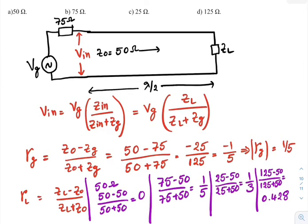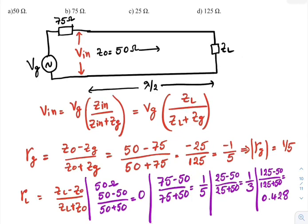In all these cases, the minimum reflection is observed here. Therefore, the answer is 75 ohm. You might have a question, if the load is 50 ohms, then there is no reflection at all.